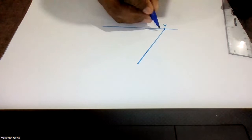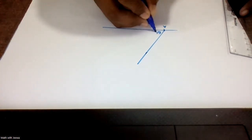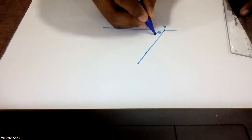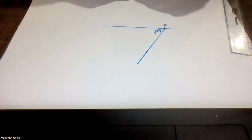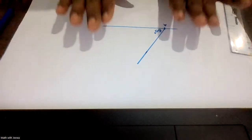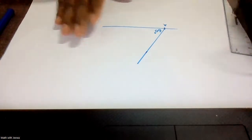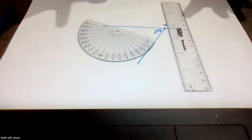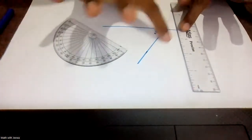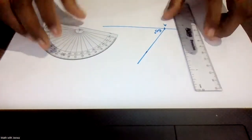Then I remove the protractor, take my ruler, and join the line. This is my 60 degree angle. What I did was draw an angle of 60 using the protractor and the ruler.